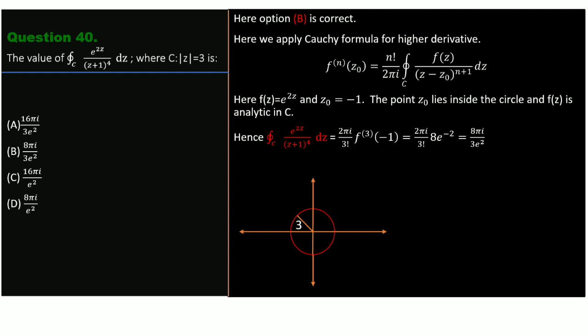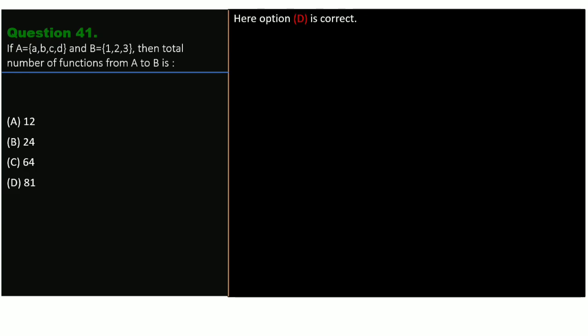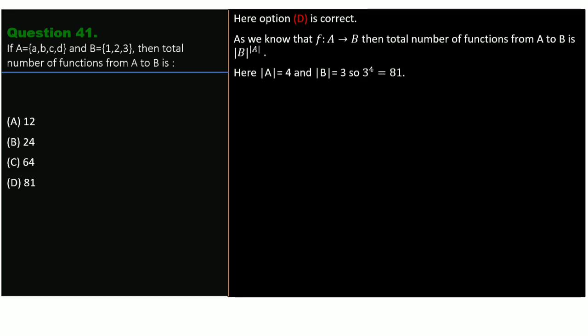Question 41. Given that set A contains elements {a, b, c, d} and B contains elements {1, 2, 3}, the total number of functions from A to B is how much? Options are 12, 24, 64, and 81. The correct answer is option D, because the total number of functions from A to B is |B|^|A| = 3⁴ = 81.